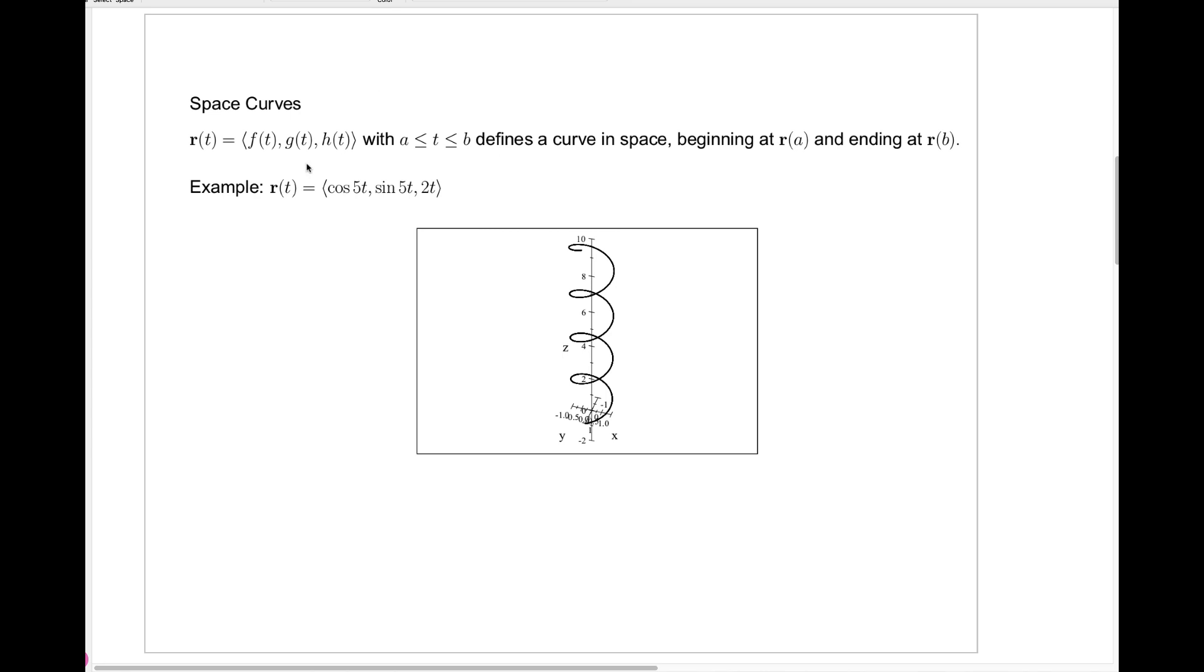So what do we mean by that? We can just look at this vector function r of t given by f of t, g of t, h of t, where the parameter t runs from a to b, and we can think of that as being a curve which begins at the vector r of a. What do I mean by at the vector r of a? Well, we're always going to think of these vectors as having their tails at the origin, and we'll just think of the point which is the head of that vector.